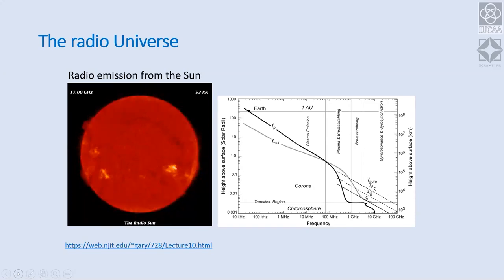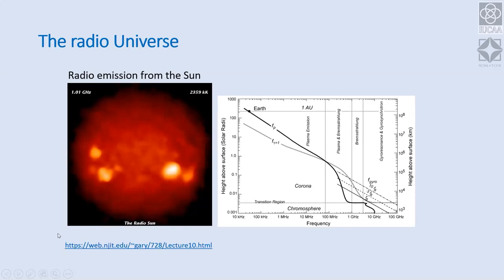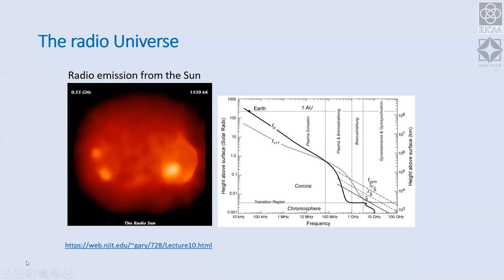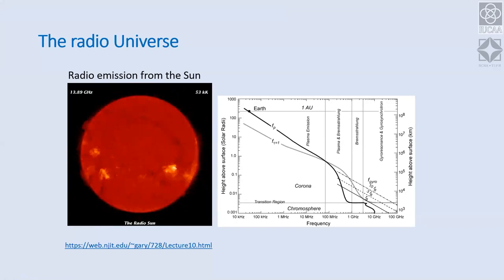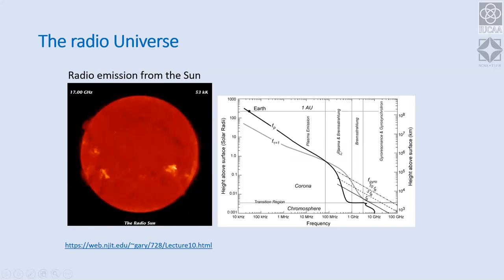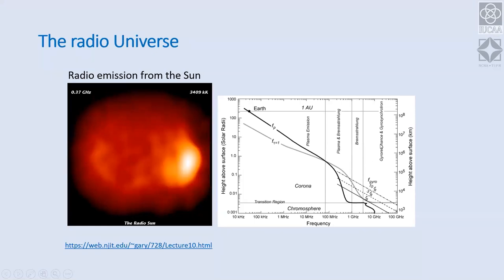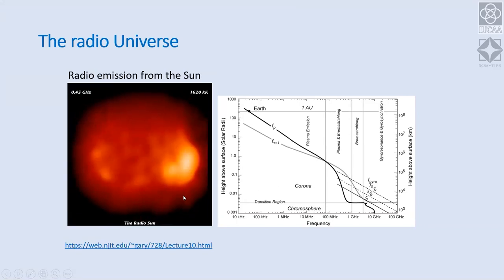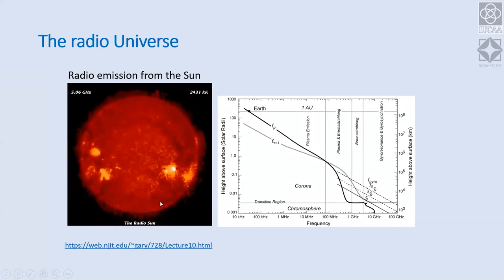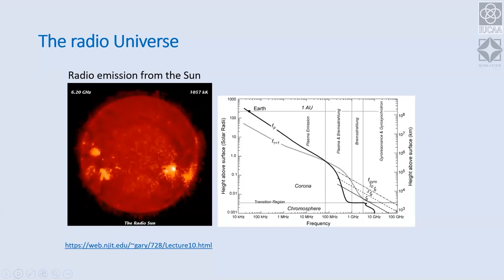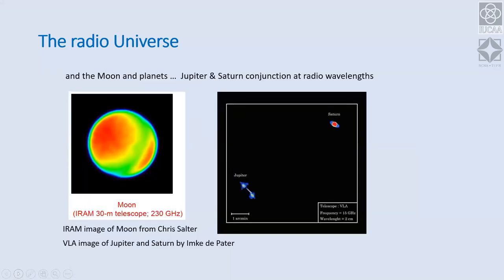The sun is one of the strongest radio sources in the sky, and my colleague Divya will talk about it. Various processes are responsible for solar radio emission — thermal bremsstrahlung, plasma processes, and gyrosynchrotron emission — and the process responsible depends on the frequency. The low-frequency emission originates from the outer layers of the chromosphere, while higher-frequency emission comes from deeper layers. Planets and even our Moon are also visible in radio; the Moon image shown here was made with the IRAM 30-meter telescope at 230 GHz.